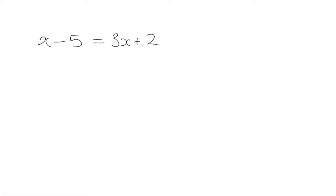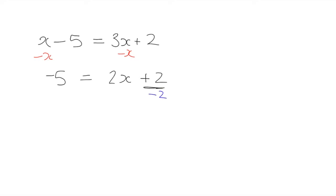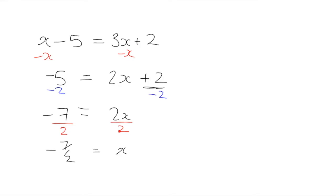It's easier if you leave x's where there's a bigger number of them. First step: get rid of all the x's from the right side by subtracting x from both sides, leaving that expression on the left and 2x plus 2 on the right. To get rid of the plus 2, subtract 2 from both sides to get 2x equals negative 7. Then divide both sides by 2, giving x equals negative 7 over 2, which is negative 3 and a half.